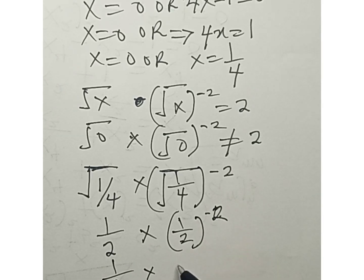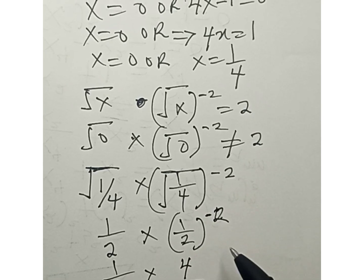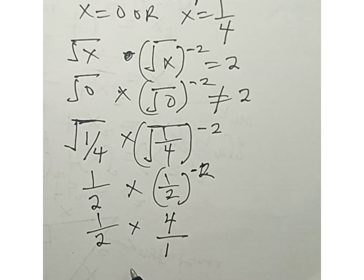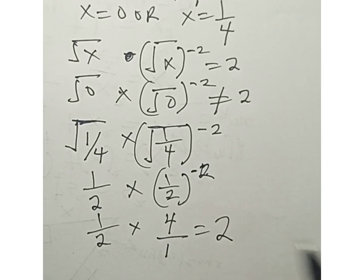times 2 raised to the power 2. 2 raised to the power 2 is 4. With the negative sign there, we're going to have 4 over 1. That's giving us 4 divided by 2 equals 2.